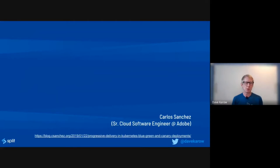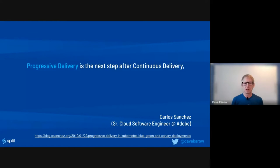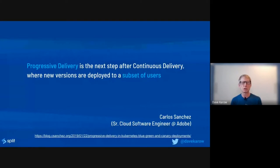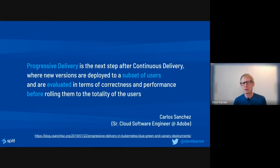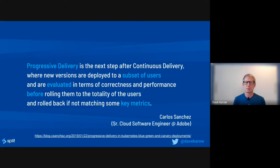Let's jump into defining progressive delivery. I'll take a definition from Carlos Sanchez, who was a senior cloud engineer at Adobe. Progressive delivery is the next step after continuous delivery, where new versions are deployed to a subset of users — and hold on to that, subset of users is really important — and are evaluated in terms of correctness and performance. We're not talking about rough testing or basic QA; we're talking about whether they really do what they were intended to do and are performant in production before rolling out to the totality of users.